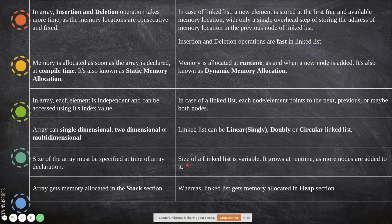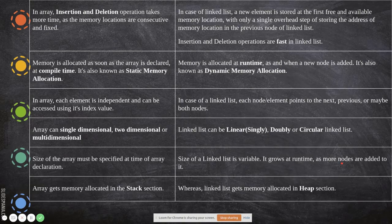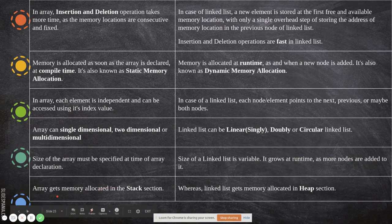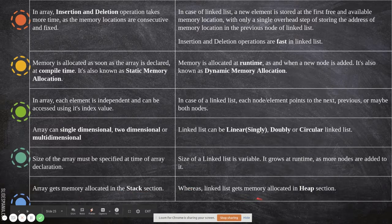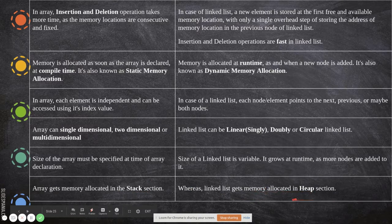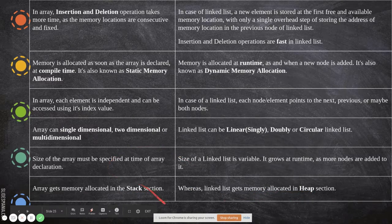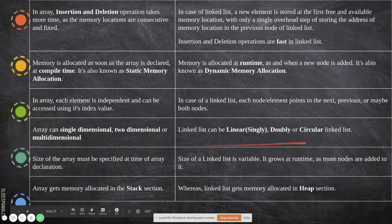Array gets memory allocated in the stack section, whereas linked list gets memory allocated in the heap section. These are the main differences between an array and a linked list.